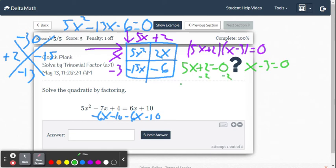Right? Subtract 2, subtract 2. 5x equals negative 2. So divide both sides by 5. x equals negative 2 fifths.